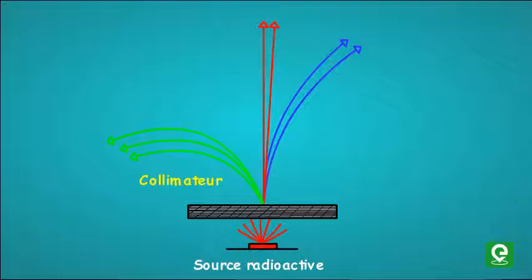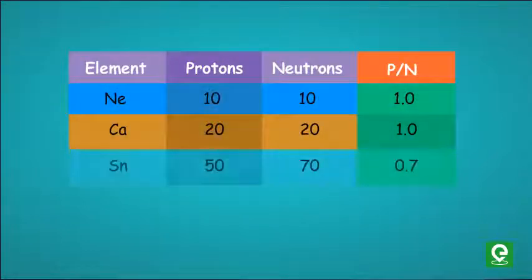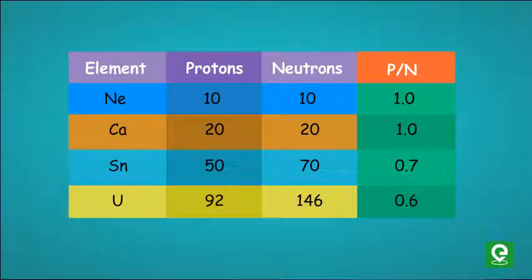An unstable nucleus emits alpha, beta, and gamma particles. As the atomic number increases, the ratio of protons to neutrons in the nucleus of an atom gets skewed, resulting in an unstable nucleus. Radioactivity is primarily observed in elements with atomic number greater than 83.